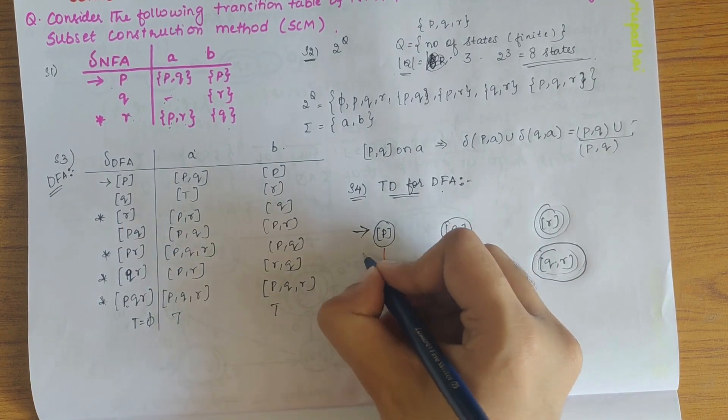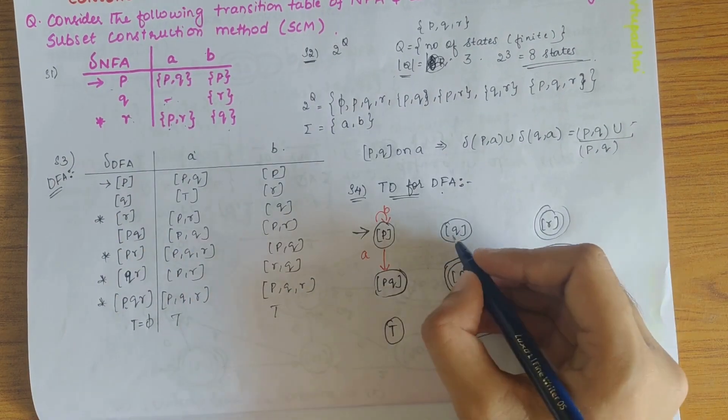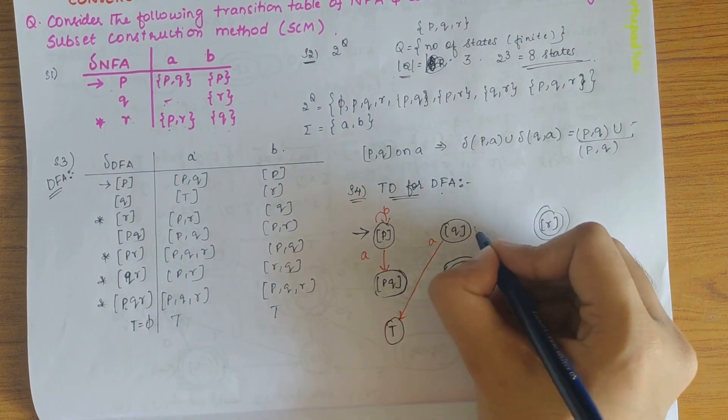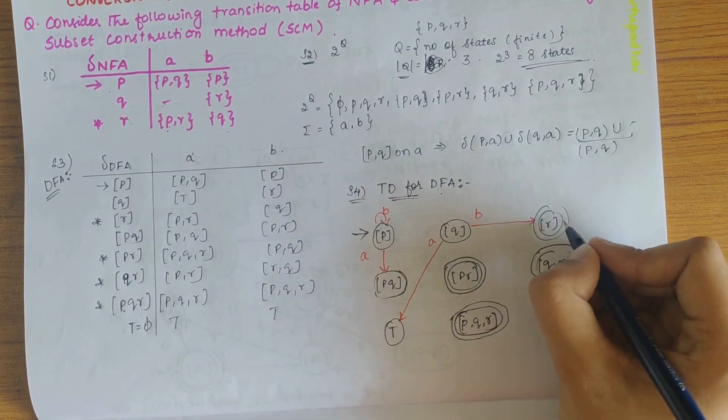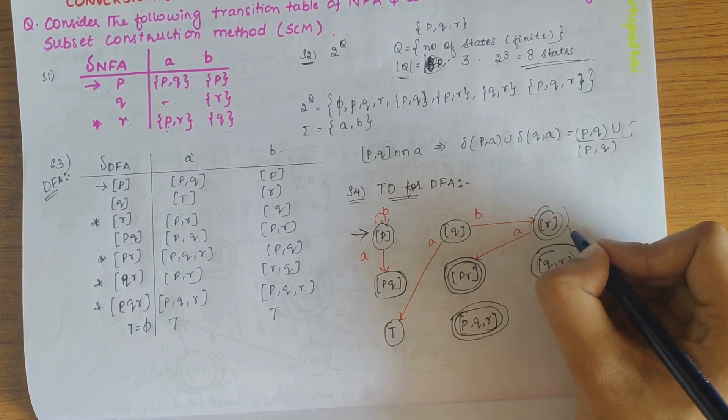p on a gives pq, p on b gives p itself, q on a gives trap state, q on b gives r. r on a gives pr, r on b gives q.